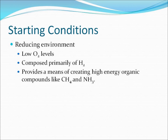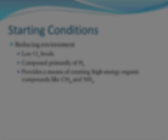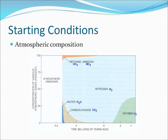The atmospheric conditions present in the early Earth play a key role in the development of the initial organic compounds. One key difference from current atmospheric conditions is the lack of oxygen in the atmosphere in early Earth conditions. Instead, the atmosphere was thought to be reducing, which provides a means of creating high energy organic compounds like methane and ammonia. The early Earth atmosphere is thought to have been primarily composed of nitrogen, with the presence of water vapor, carbon dioxide, methane, and ammonia. Specific ratios are speculative, and since it is not possible to return to measure atmospheric composition, we will have to settle for what geologists can extrapolate from studies of ancient rock formations.